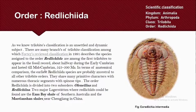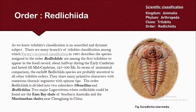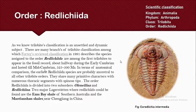The first order: Redlichiida. As we know, trilobite classification is an unsettled, dynamic, and very controversial topic. There are many sorts of classification for trilobites, among which Fortey's Revised Classification, published in 1997 in the Trilobites 3rd edition book, described the order Redlichiida as among the first trilobites to appear in the fossil record.